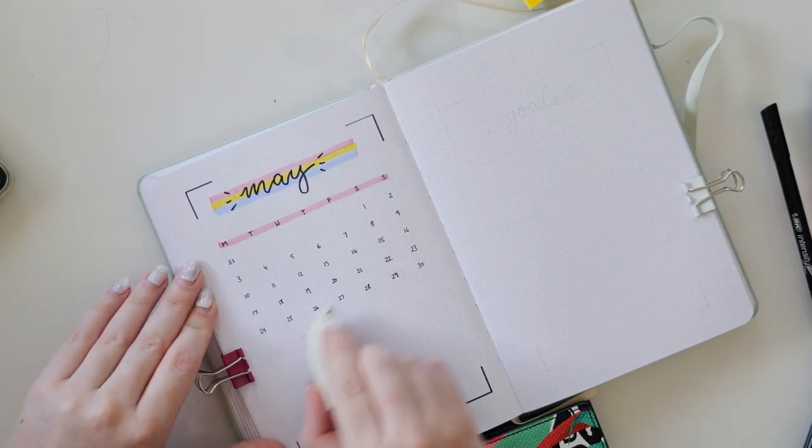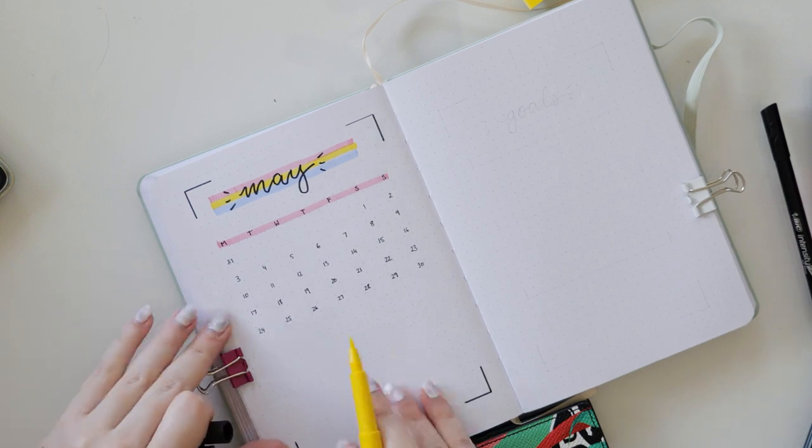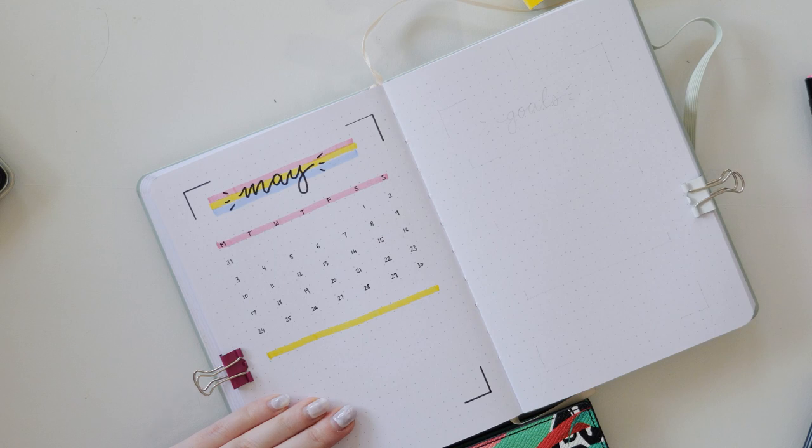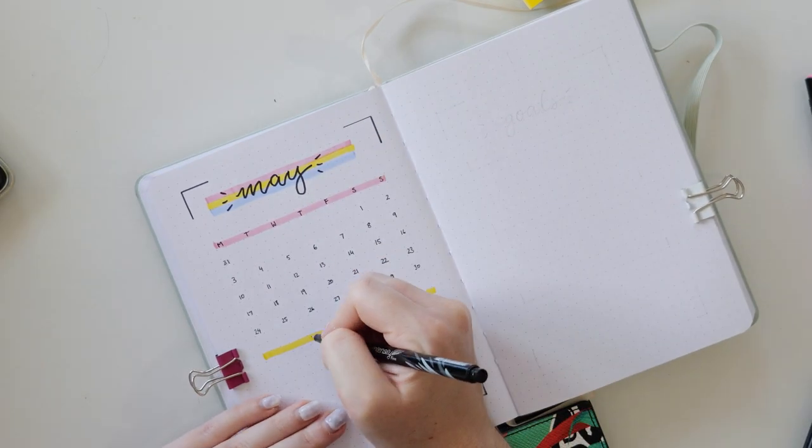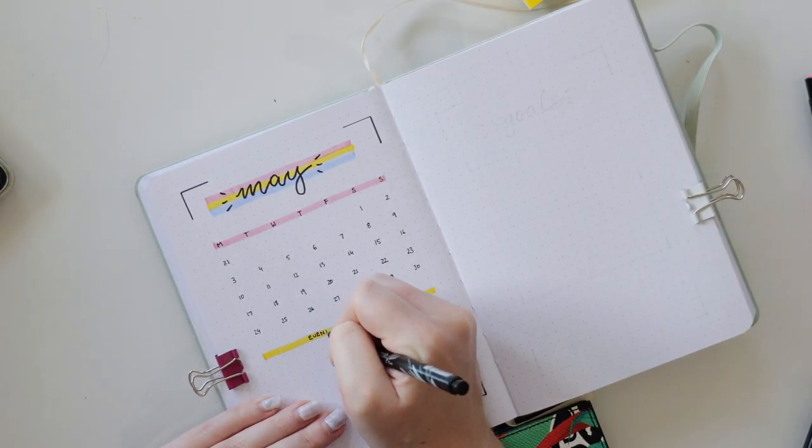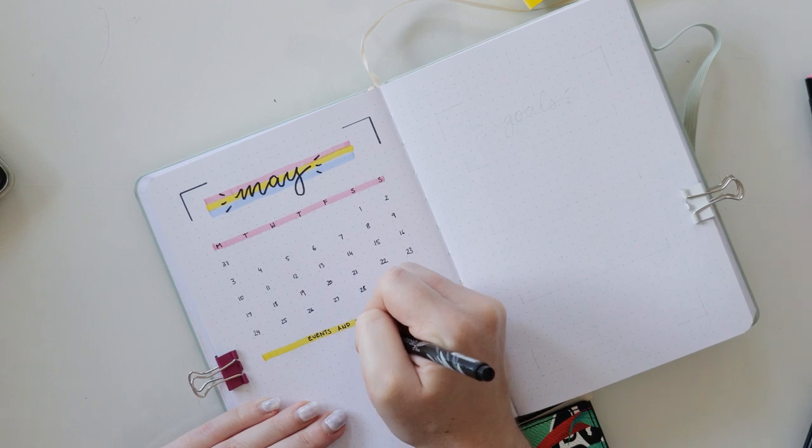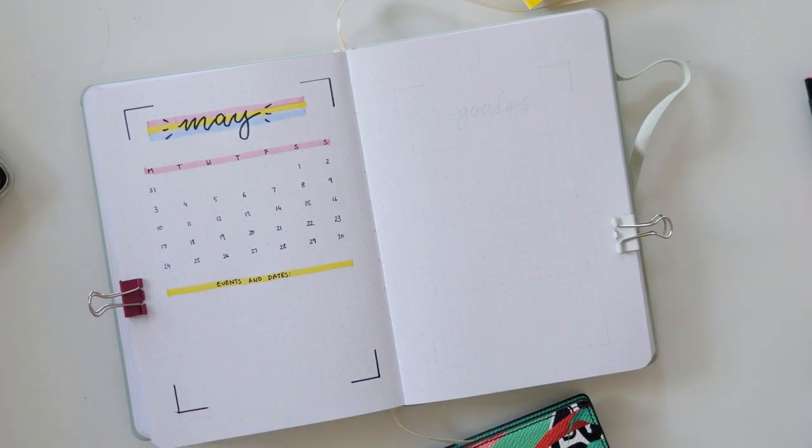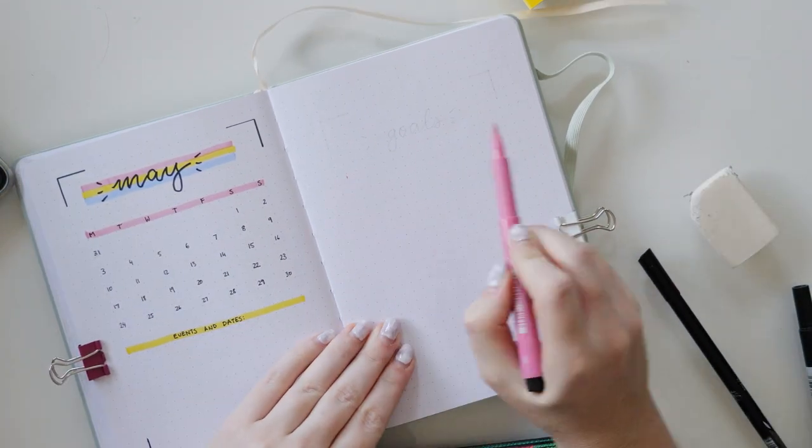And then below that, I'm going to add in the important dates that I need to remember. So any events, any dates, I'm putting birthdays and stuff all in that section down below. And I have added those since I filmed this. You won't see them in this video, but I ended up adding them as three columns. So I did events and birthdays and I actually can't remember what the last one was, but there are three columns, just so you know.